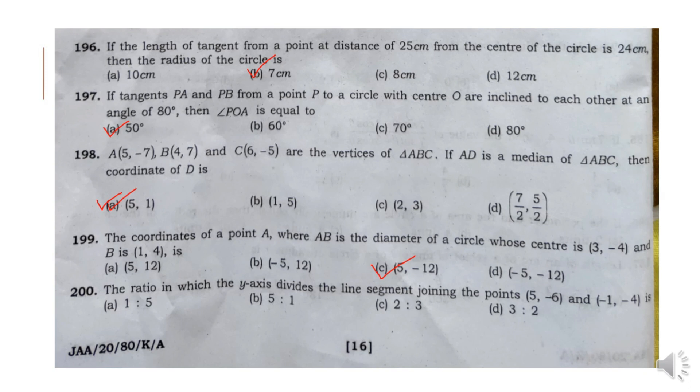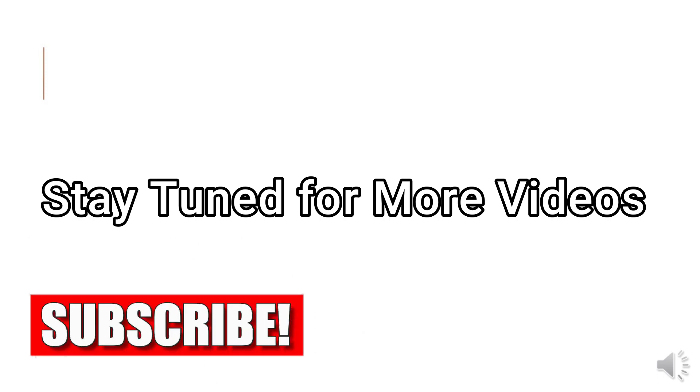Last question, Question 200: The ratio in which the Y-axis divides the line segment joining the points (5, minus 6) and (minus 1, minus 4) is 5 is to 1. Option B. So my mathematics section is complete. Stay tuned till then — goodbye.